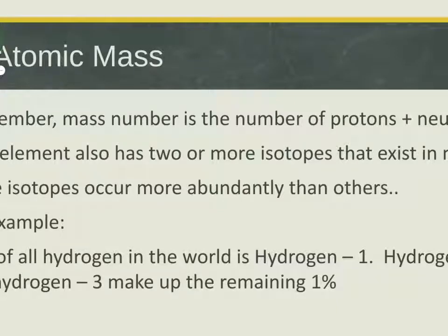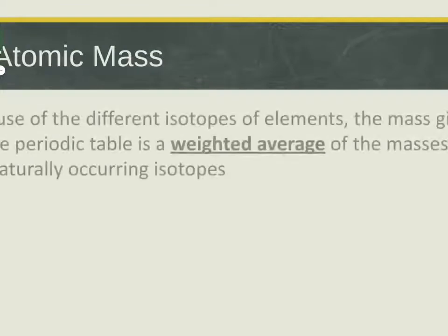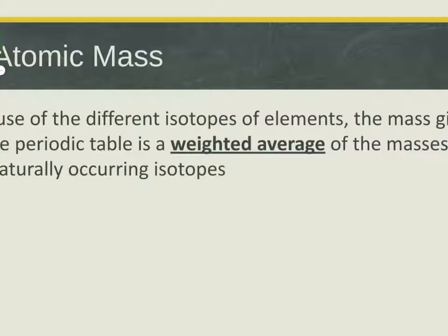Hydrogen-2 has one proton and one neutron, and hydrogen-3 has one proton and two neutrons. Those make up the remaining one percent. So if we just averaged their masses — one plus two plus three is six, divided by three is two — we'd get a mass of two. But that's not accurate because 99% of all hydrogen is hydrogen-1, so we give it special attention. The mass on the periodic table is a weighted average because some isotopes are more abundant.